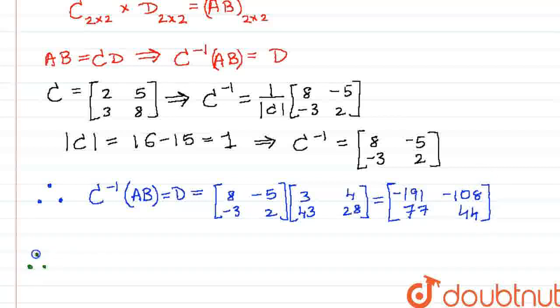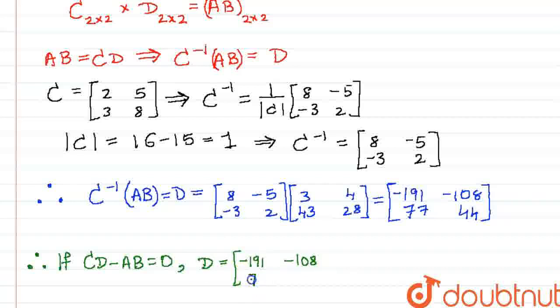Hence, we can conclude that if CD minus AB is the null matrix, D is the matrix negative 191, negative 108, 77, 44. Thank you.